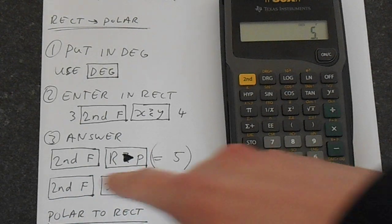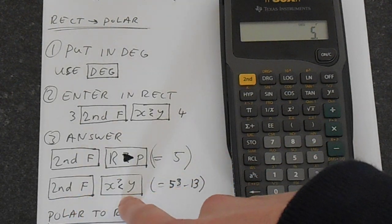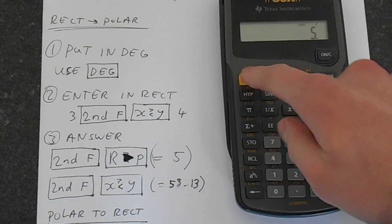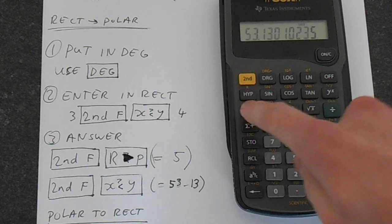So how do we get the theta? Well, second function, and this x, y, that takes us to the other side as a comma. So second function, x, y,